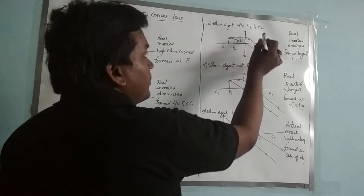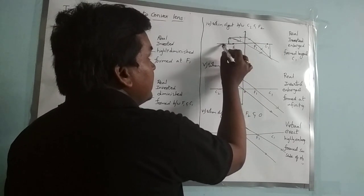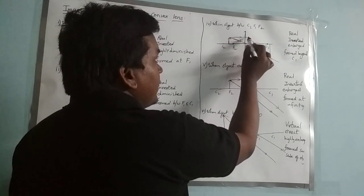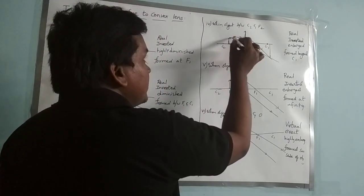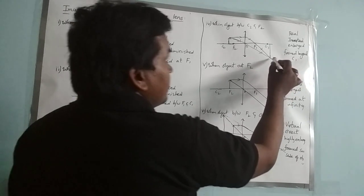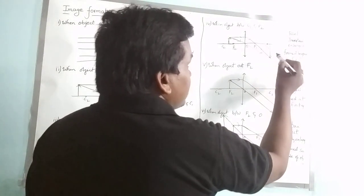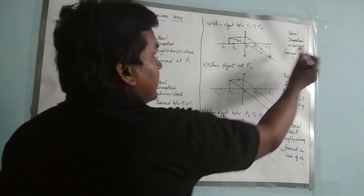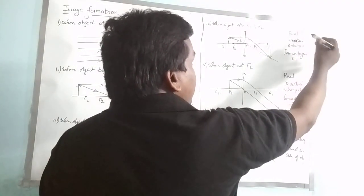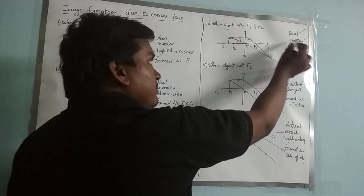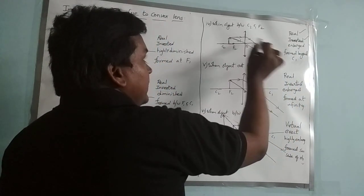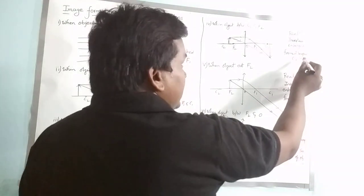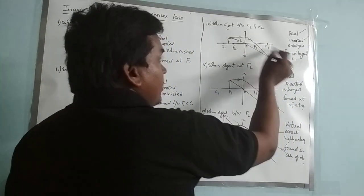Coming to the fourth case: when the object is between C2 and F2. Two rays are considered: a ray parallel to the principal axis will pass through the focus, and a ray passing through the optical center will go undeviated. These two rays meet, forming the image beyond C1. The image is real, inverted, and enlarged — the size of the image is much greater than the size of the object. It is formed beyond C1.